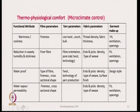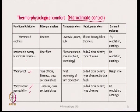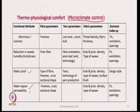Another example is thermophysiological comfort, where micro-climatic control is discussed. Micro-climatic control is dependent on warmness, reduction in sweaty humidity, waterproofness, and water vapor permeability. Many attributes are relevant to micro-climate control, which is part of thermophysiological comfort. This table shows how these functional attributes are connected to fiber parameters, yarn parameters, fabric parameters, and garment makeup. One should go through this slowly and consider whether anything more can be added.